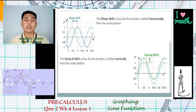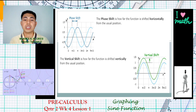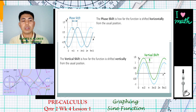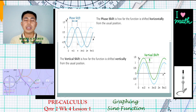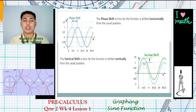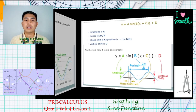The next term is phase shift, which refers to how far the function is shifted horizontally from the usual position — either to the left or to the right. The next term is vertical shift, which shows how far the function is shifted vertically from the usual position — either upward or downward.